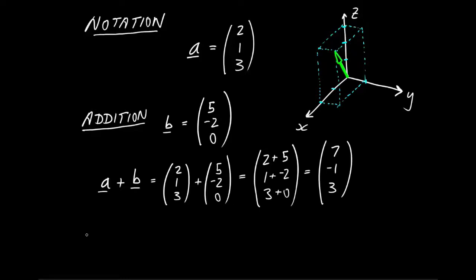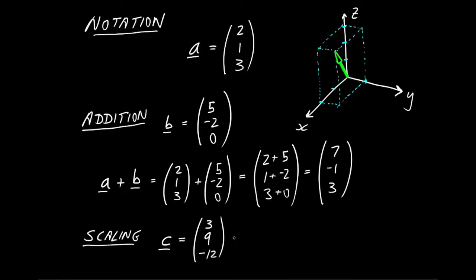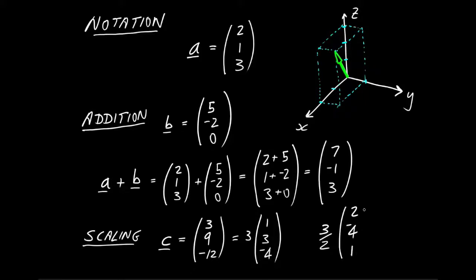How about scaling a vector? We can multiply a vector by a simple number, and correspondingly we just end up multiplying each of its components. For example, 3, 9, minus 12 — each component is a multiple of 3, so we can write this as 3 times (1, 3, minus 4). Equivalently, someone might give us a vector in the form 3 over 2 times (2, 4, 1). We just multiply in component by component: 3 times 2 is 3, 3 over 2 times minus 4 is minus 6, and 3 over 2 times 1 is 3 over 2.